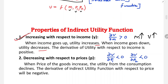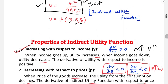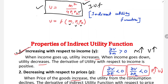The second property is that the indirect utility function is decreasing with respect to price. The derivative with respect to p1 is negative. When the price of goods increases, the utility from consumption declines. There is an inverse relationship between the price of goods and indirect utility. The derivative of U with respect to p1 or p2 is negative.